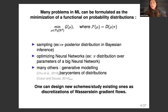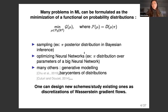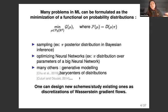Many problems in machine learning can be formulated as minimizing some dissimilarity between probability distributions. For instance, in sampling, the distribution of interest is the posterior distribution of parameters in Bayesian inference. The second problem is optimizing large neural networks, where the distribution of interest pi can be the optimal distribution over parameters. There are also other problems such as generative modeling and computing the Wasserstein barycenter of distributions. This viewpoint is interesting because you can design new schemes for approximating pi or study existing schemes as discretizations of Wasserstein gradient flows.